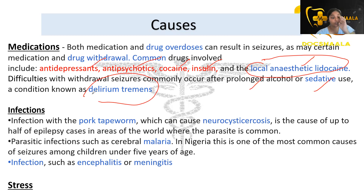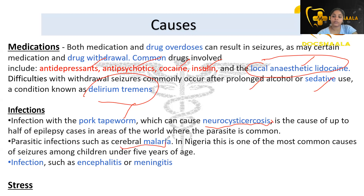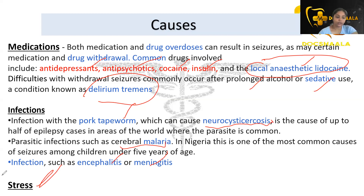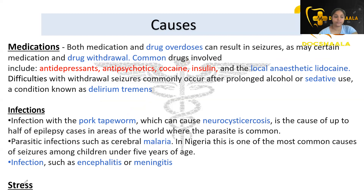Infections such as neurocysticercosis — infection with a tapeworm — is the cause of about half of epilepsy cases in endemic areas. Parasitic infections such as cerebral malaria are among the most common causes in countries like Nigeria. Encephalitis and meningitis are also causes. Apart from these, stress is the most common trigger in patients.